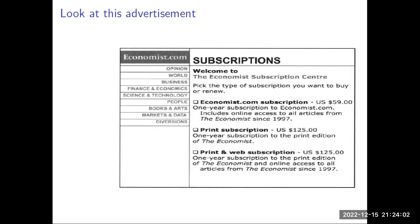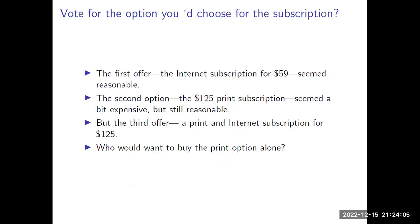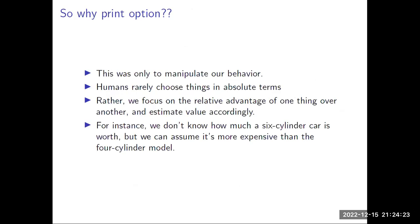You being a choice maker, which choice will you go for? The first offer, the internet subscription for $59 seemed reasonable. The second option, the $125 print subscription seemed a bit expensive but still reasonable. But the third offer, a print and internet subscription for $125 - who would want to buy the print option alone? Obviously, no one. So why the print option?